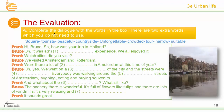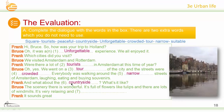Now let's go to evaluation. Complete the dialogue with the words in the box — there are two extra words you do not need to use. The words are: square, tourists, peaceful, countryside, unforgettable, crowded, tour, narrow, and suitable. The answers: 1 — unforgettable; 2 — tourists; 3 — tour; 4 — crowded; 5 — narrow; 6 — countryside; 7 — peaceful.